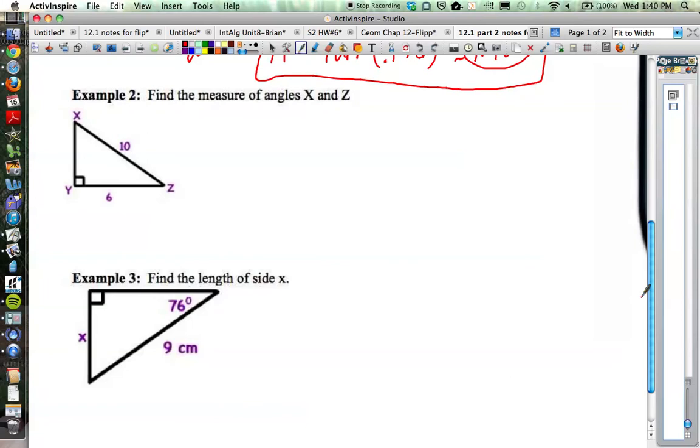Example two, find the measure of angles X and Z. Let's start with Z. Here's angle Z. And if I want to know the degree of angle Z, I want to think about the two sides that I'm given. With angle Z, what are those two sides? That's right, this one is the adjacent side, and this one would be the hypotenuse related to angle Z. We don't actually know the opposite side. So we're just using the adjacent side and the hypotenuse.